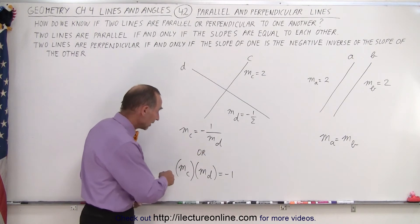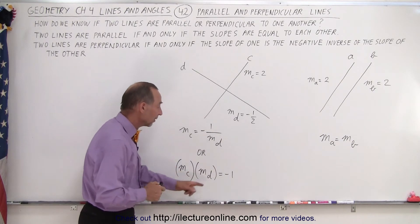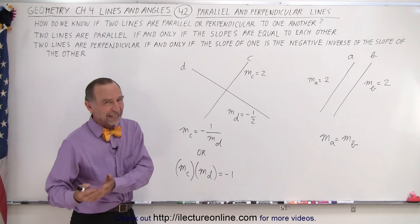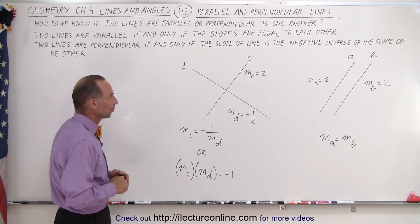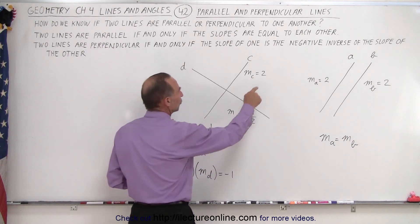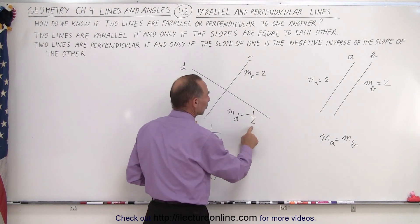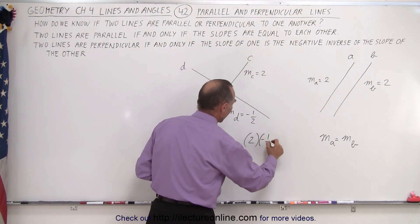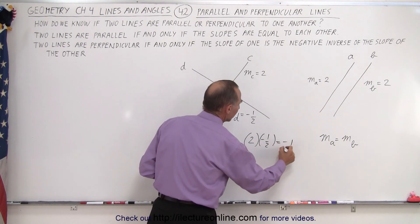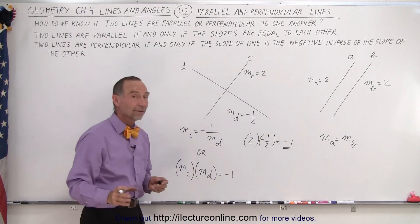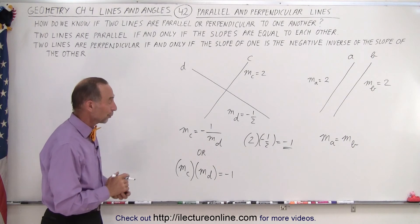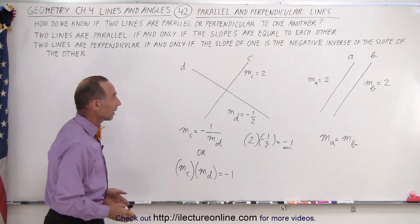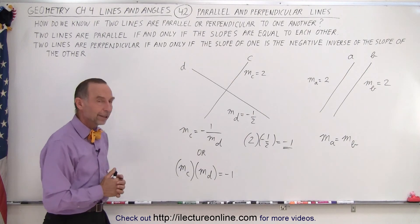Another way of saying it is: if you multiply the two slopes together and get negative one, then they're perpendicular, because one is the negative inverse of the other. Here you can see that if you take 2 and multiply by negative one half, you get negative one — which means the lines are perpendicular to one another. And that's what we mean by lines being parallel and lines being perpendicular to one another.